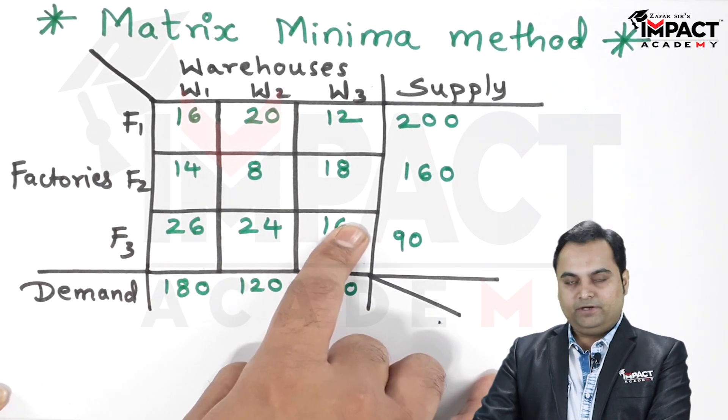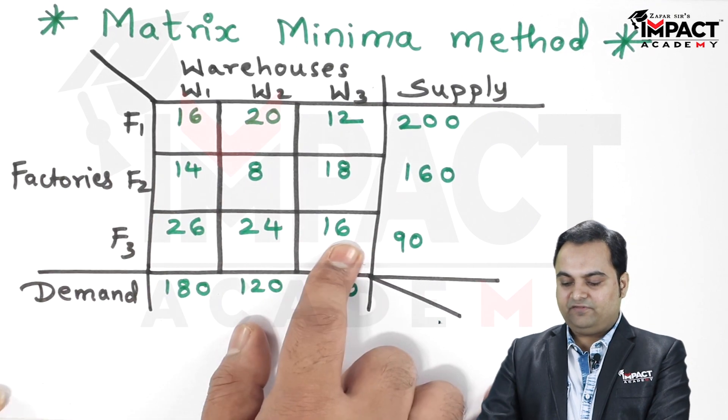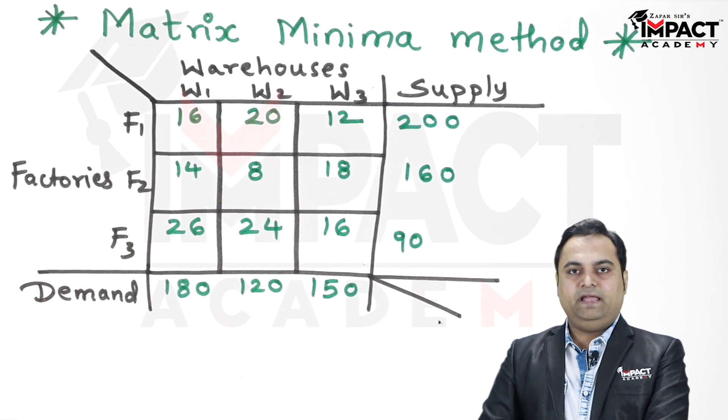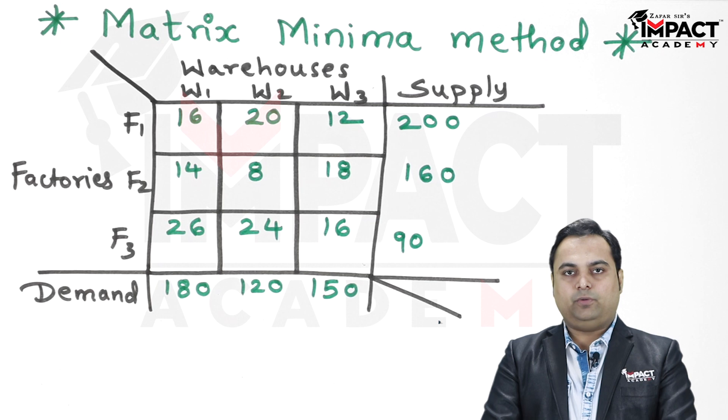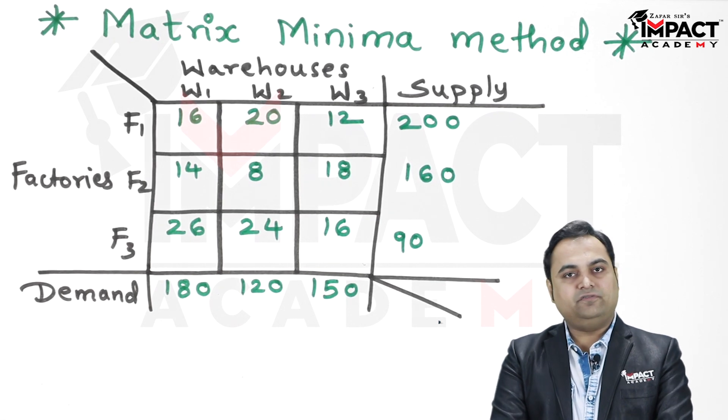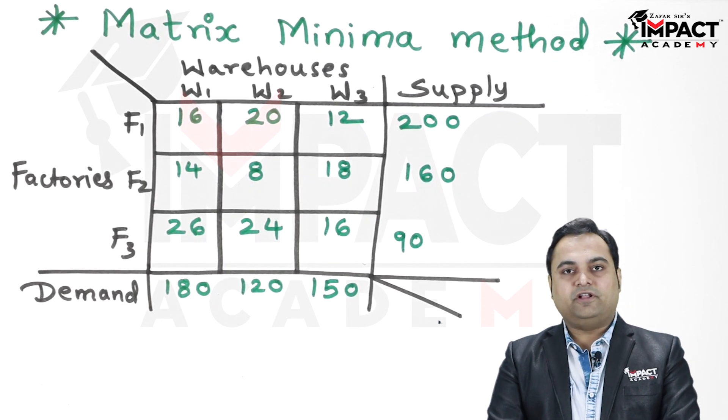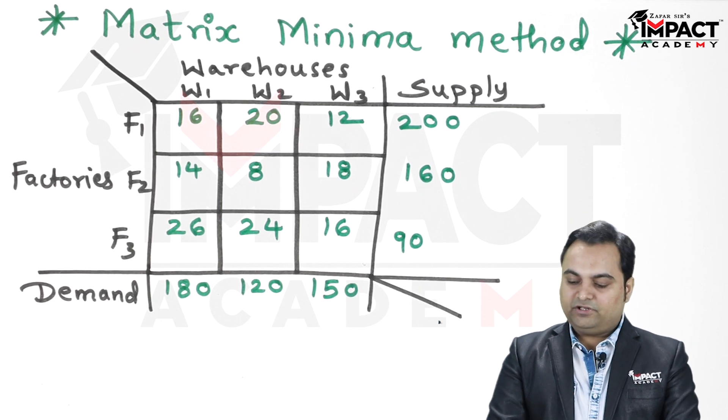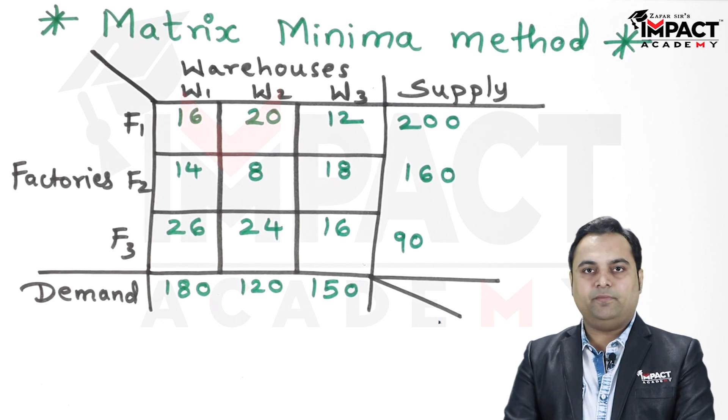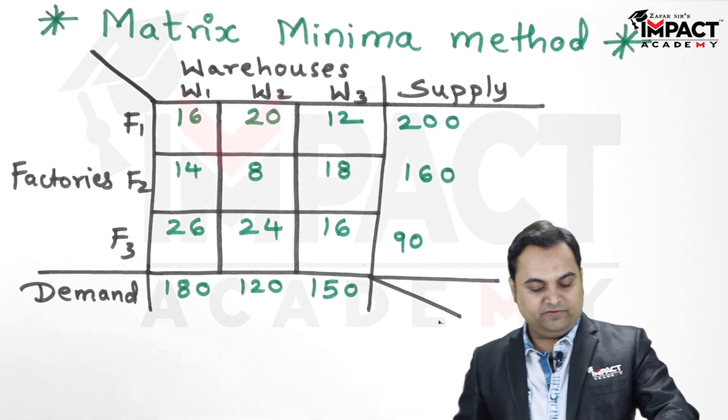Our aim in such kind of problems which belong to the category of transportation problems is to minimize the total transportation cost. Here the method we are using is the matrix minima method. For that, first of all we have to check whether the total supply and total demand are equal.